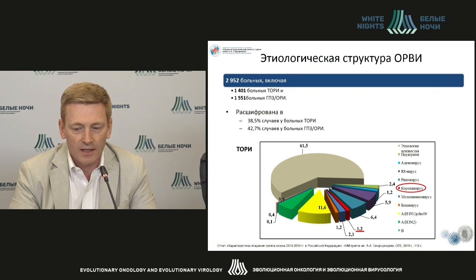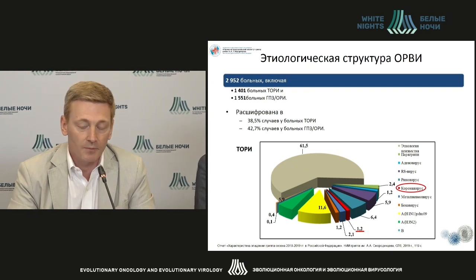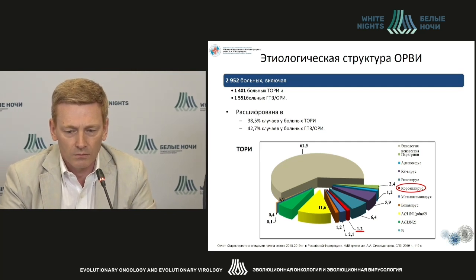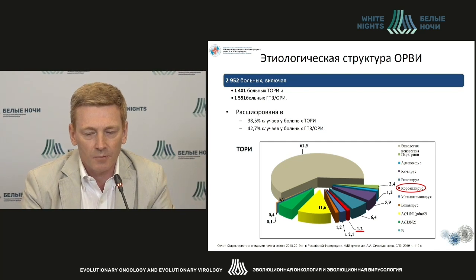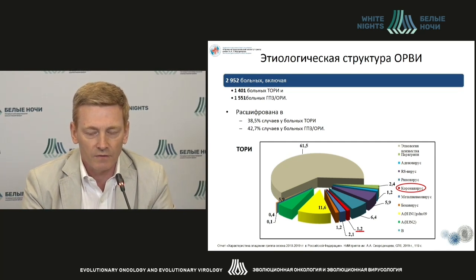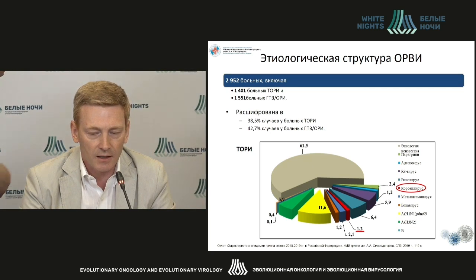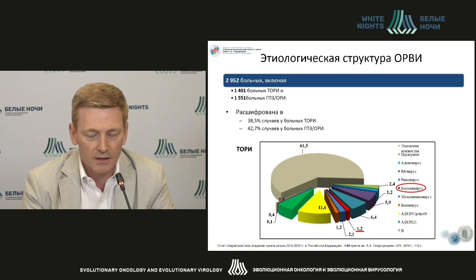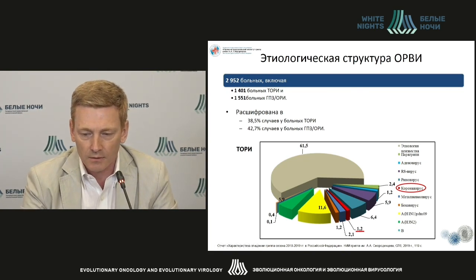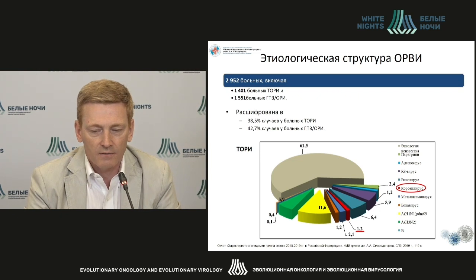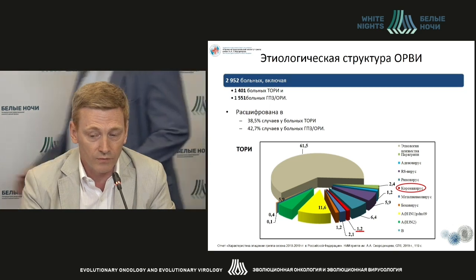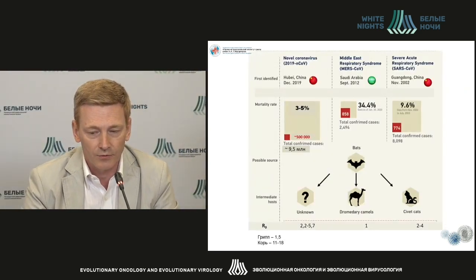How frequently can we see this pathogen in the population? Looking at 2018-2019 incidence rate data for nearly 3,000 patients with severe respiratory infections who were hospitalized: among people with severe forms, 1.2% of patients had coronaviral infections. These are the four pathogens that are circulating constantly.